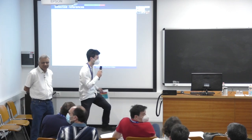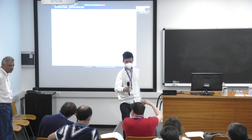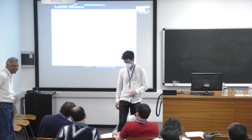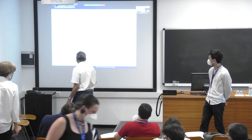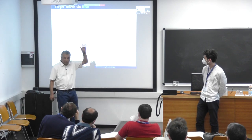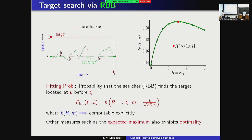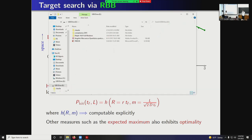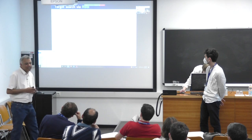We have time for a few questions. Have you looked at the extreme statistics of this resetting bridge? Yes — we computed the expected maximum of the process and again you find an r* at which it becomes maximal. Is there a connection between the expected maximum without resetting and the optimal rate with resetting? Not really — the r* values for different observables cannot be so easily connected; it's more subtle than that.